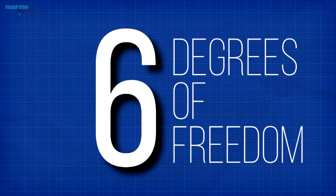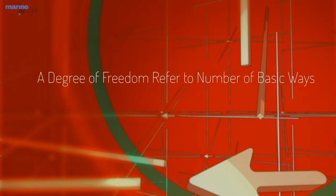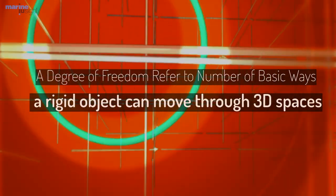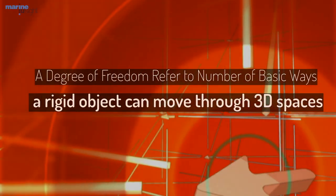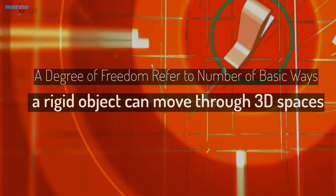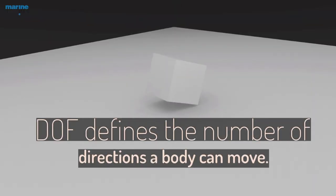Ship motions are defined by the six degrees of freedom that a ship, boat, or any other craft can experience. Degrees of freedom refer to the number of basic ways a rigid object can move through a three-dimensional space. In other words, degrees of freedom defines the number of directions a body can move.